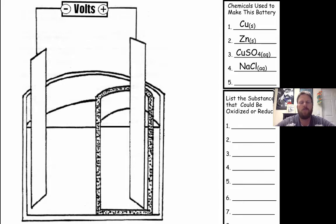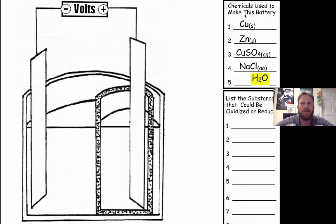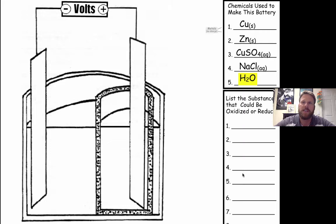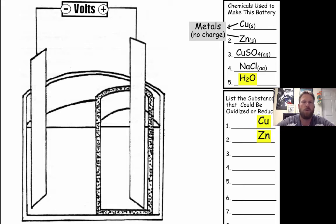To construct a representation of a battery, you must first start with the chemicals used to construct that battery. Two of these substances are going to be aqueous solutions, so water is also a chemical we have to consider. We're going to take this list of chemicals used to make the battery and break it up to figure out the substances that could be oxidized or reduced. Since the metals are solids, they will go directly into our list. The aqueous solutions need to be split up into ions.